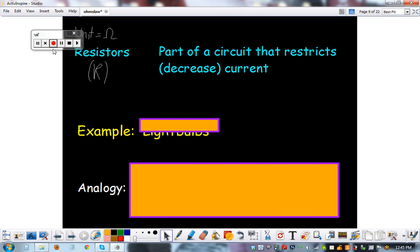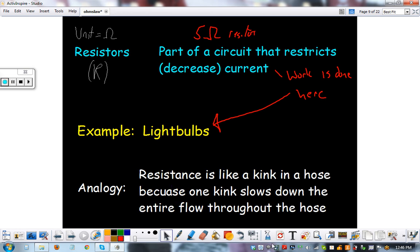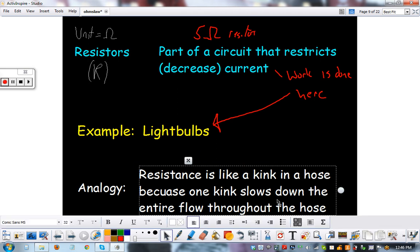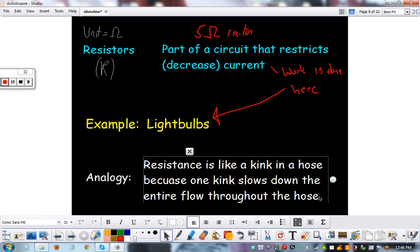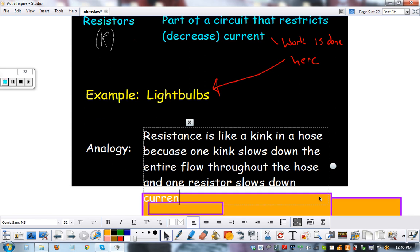Finally, resistors. Here's your symbol and formula. Here's your units. So it could be a 5-ohm resistor. It's the part of the circuit that restricts or decreases current. This is the part of the circuit where work is done. For example, in our little lab that we did, light bulbs are a common resistor. And here's your analogy. Resistance is like a kink in a hose because one kink slows down the flow throughout the entire hose. And I'm going to add to this, one resistor slows down current in the circuit.